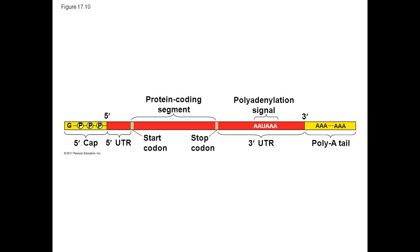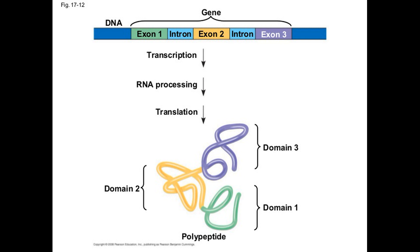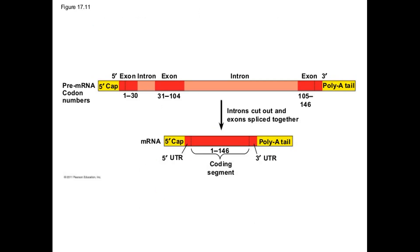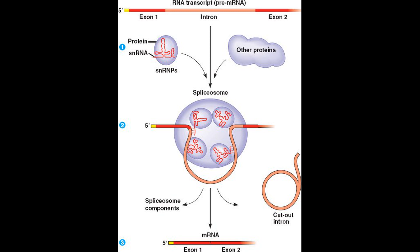At the 5' end, a modified guanine structure called a 5' cap is added, and at the 3' end, an enzyme adds a whole bunch of adenine nucleotides, forming a poly-A tail. These two structures protect the mRNA from degradation and facilitate its export from the nucleus. Furthermore, most genes of eukaryotes and their RNA transcripts contain segments of long stretches of nucleotides that are not translated into proteins, called introns. These are interspersed between segments that are translated into proteins, called exons. Exons often correlate to functional regions of the protein called domains. Before translation can proceed, these introns have to be spliced out, which is done by a molecular complex called spliceosomes.